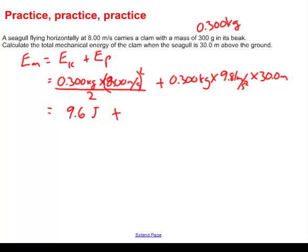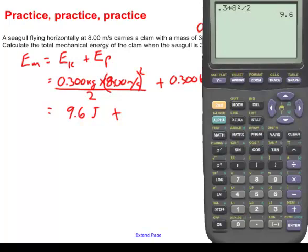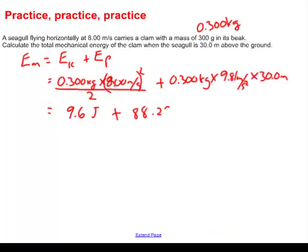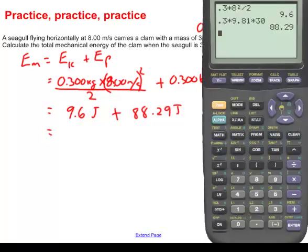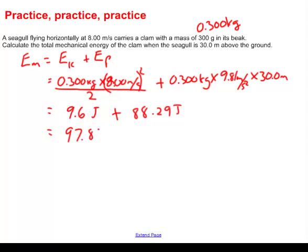Now add to that the potential energy. So we've got 0.3 kilograms multiplied by 9.81 meters per second squared, multiplied by a height of 30 meters above the ground, and what do we get? We get an additional 88.29 joules. So there's my kinetic energy and my potential energy, and now all I've got to do is basically add these two guys together on the calculator. So what is 9.6 plus 88.29? We get 97.89 joules in total. Looks like I'm going to have to round this off to just three significant digits. So I guess more appropriately, we would say this is 97.9 joules of total mechanical energy.